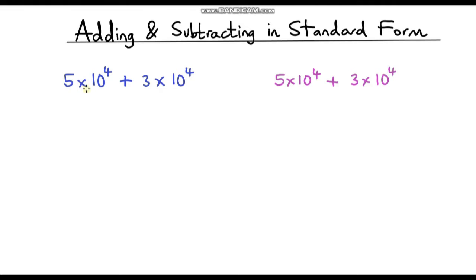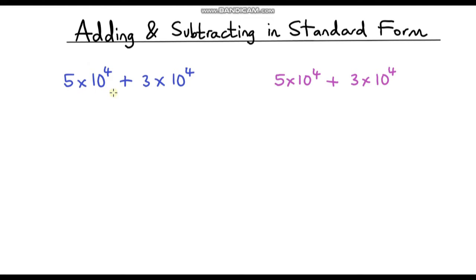I've got a question here: 5 times 10 to the power 4, add 3 times 10 to the power 4. Notice I don't need any brackets in here because we're doing the multiplication before addition. We've got this number written in standard form and we're adding on this number that's also written in standard form. I've written it out twice because there are two ways you could think about doing this. We could write these numbers out in full and then just add them together.